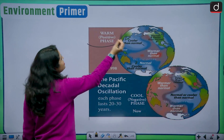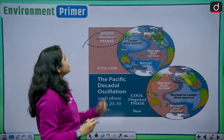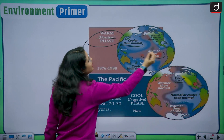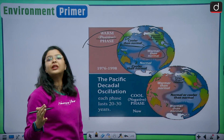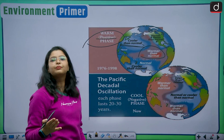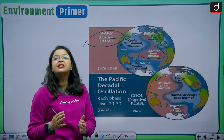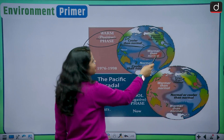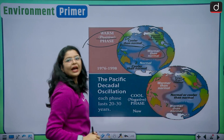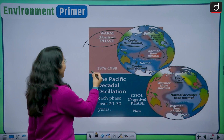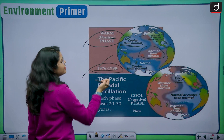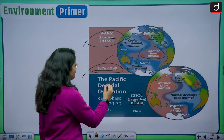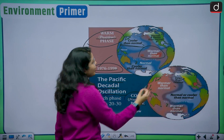Let us understand this better with a pictorial representation. In the warm phase, also known as the positive phase, the temperature in the Asia region remains cooler than normal while the temperature in the Pacific region remains warmer than normal. Sea surface temperatures around the Pacific Ocean remain higher than average. This warmer or positive phase occurred around 1976 to 1998.